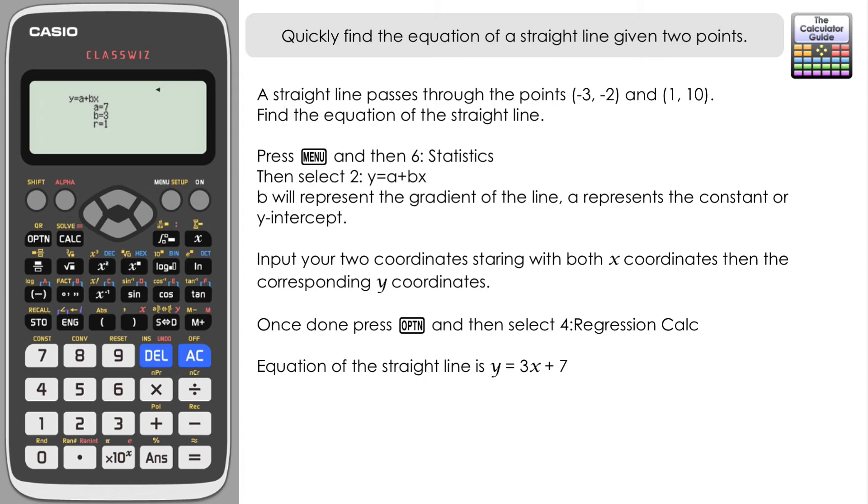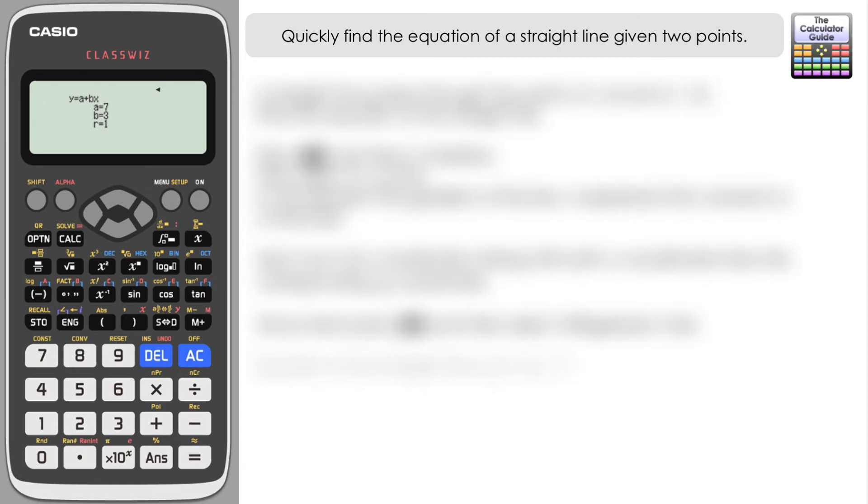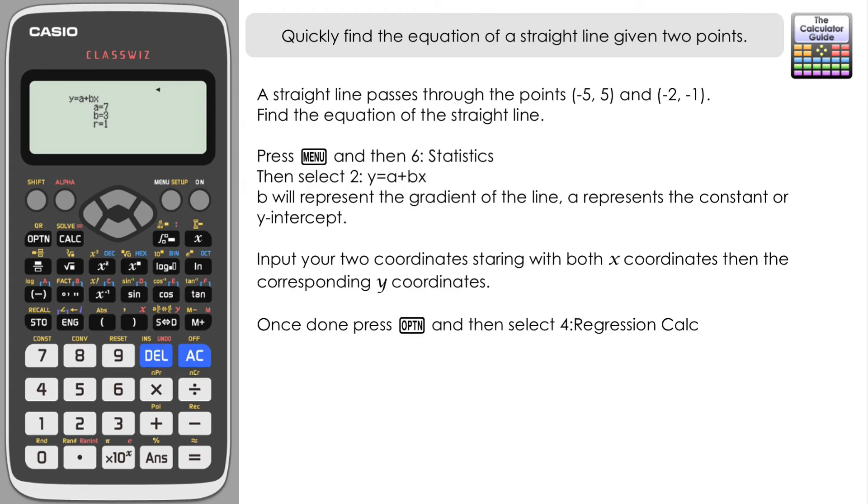So let's have a go with the second question now. You can pause it at this stage if you wanted to have a go first before I go through the answers. So we've got two coordinates, slightly different this time: we've got (-5, 5) and we've got (-2, -1).